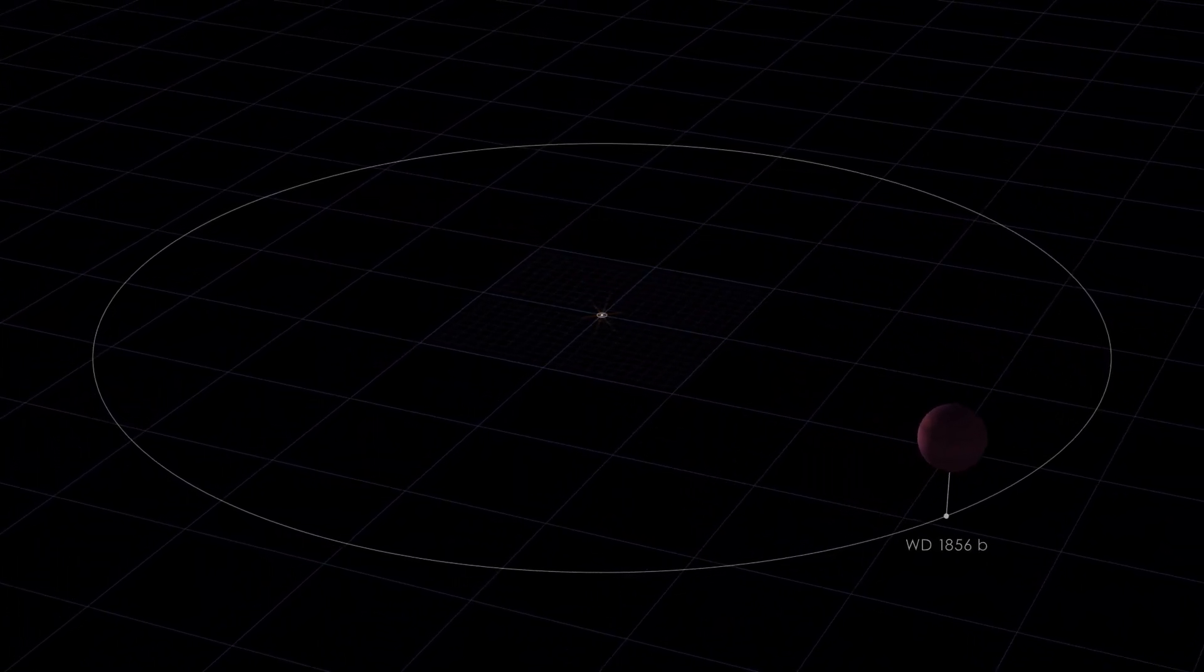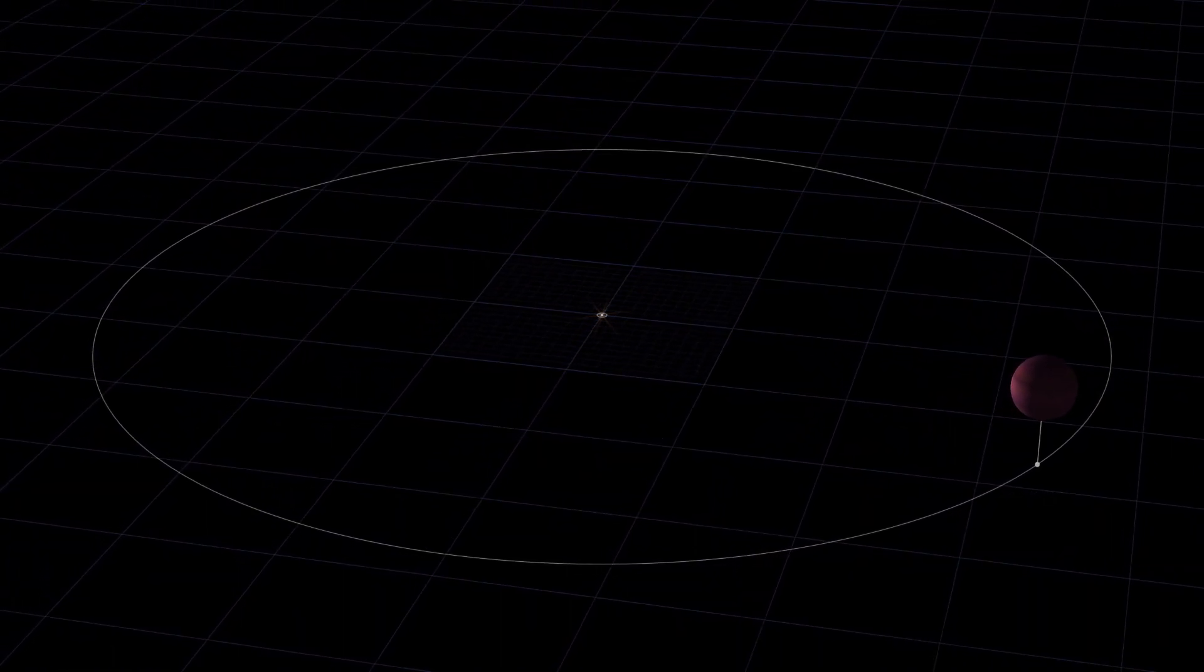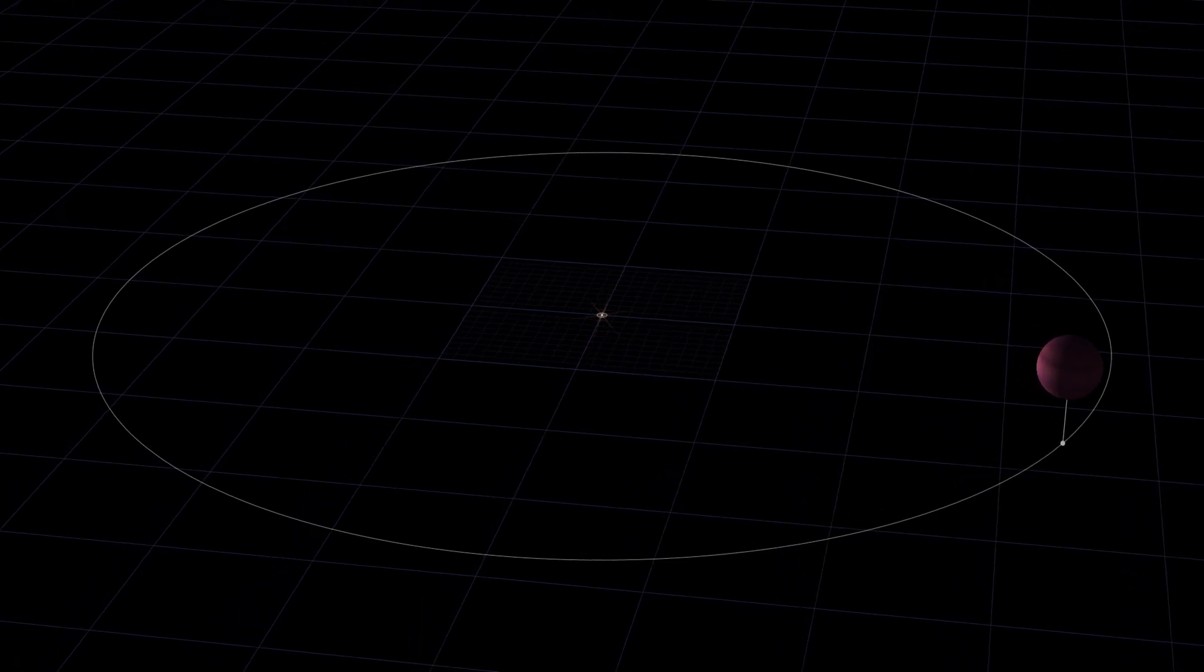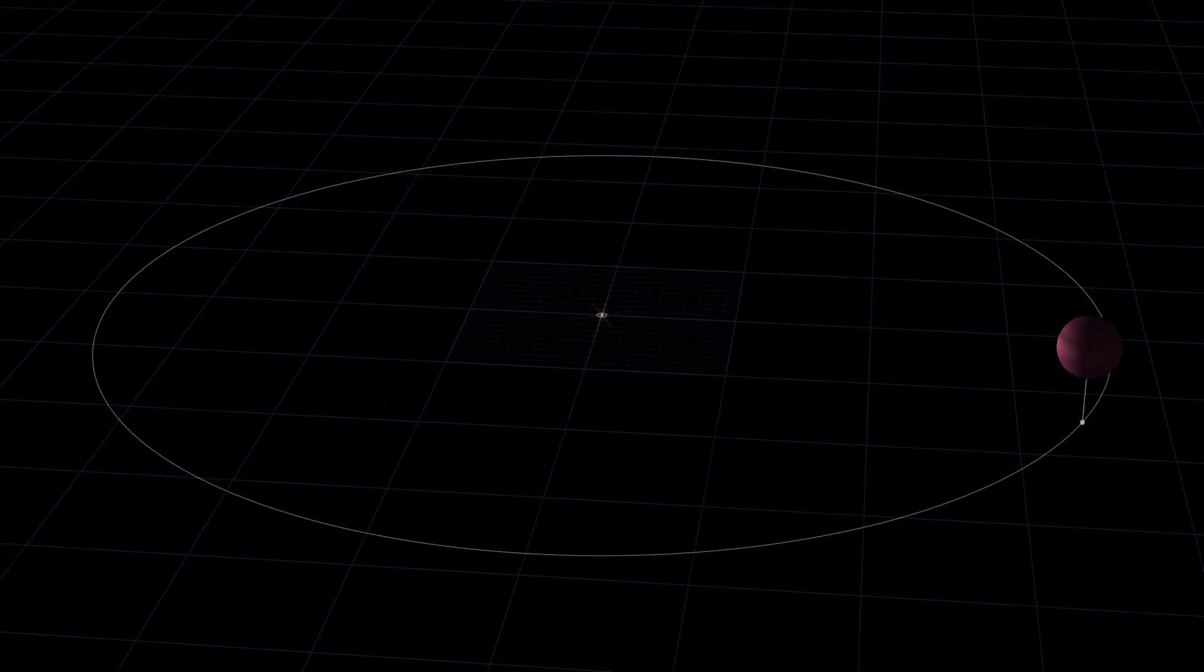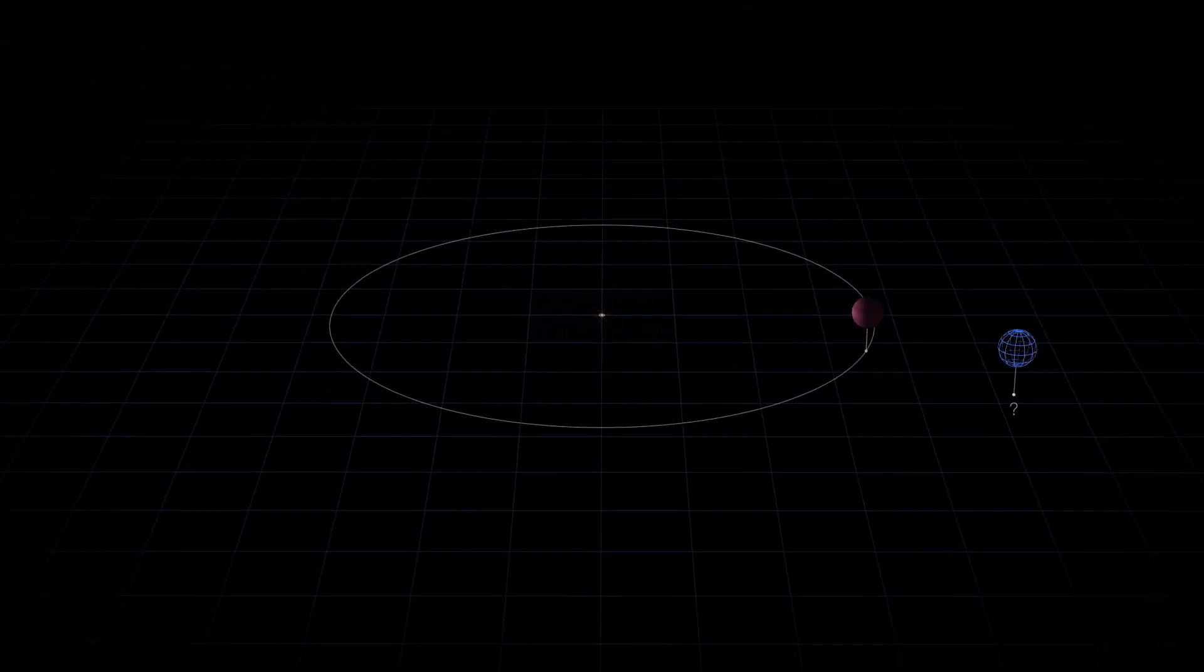So the way they attempt to explain this is that there must have been other Jupiter sized bodies in close orbit to this planet and that the gravitational influence of these objects could then allow an instability to develop, allowing this planet to be knocked inwards.